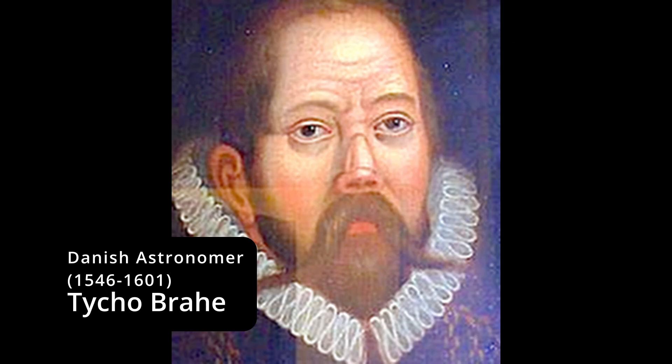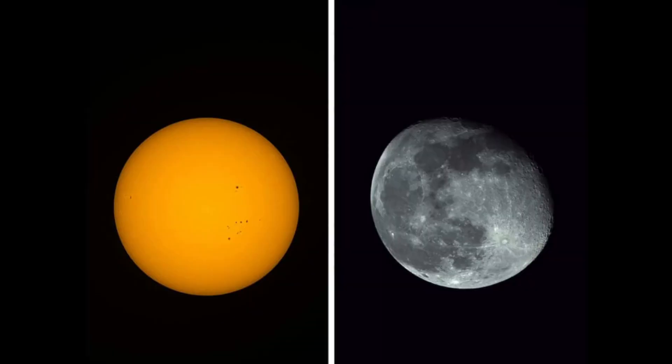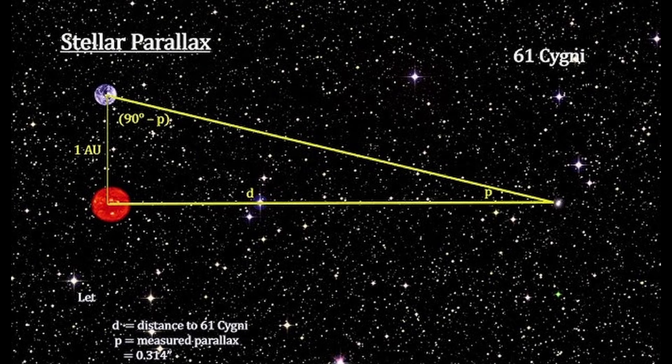Tycho was quite skilled at measuring parallax for nearby celestial bodies, such as the Moon and planets, which showed observable shifts. Tycho argued that if Earth were in motion around the Sun, as Copernicus proposed, the positions of nearby stars should shift against the background of distant stars over the course of a year. This phenomenon is known as stellar parallax.